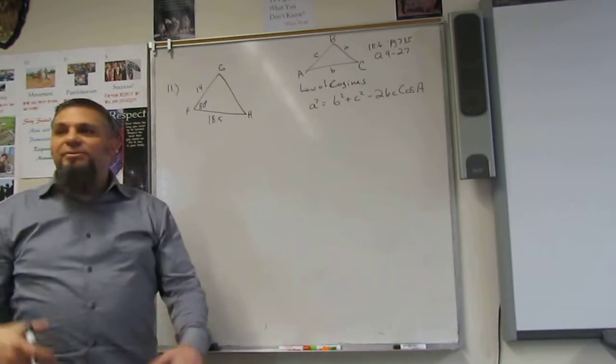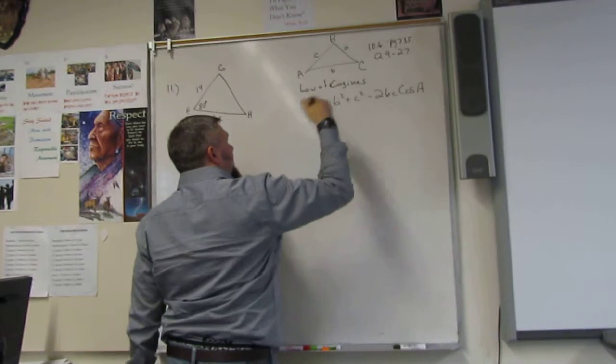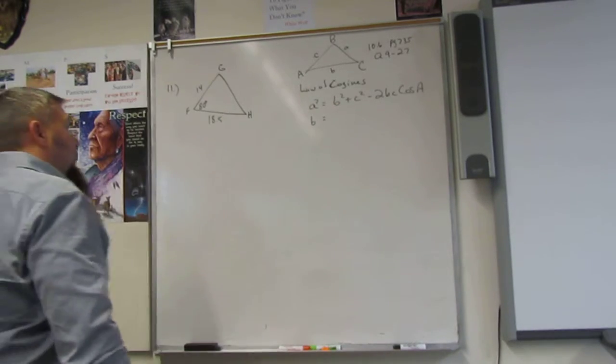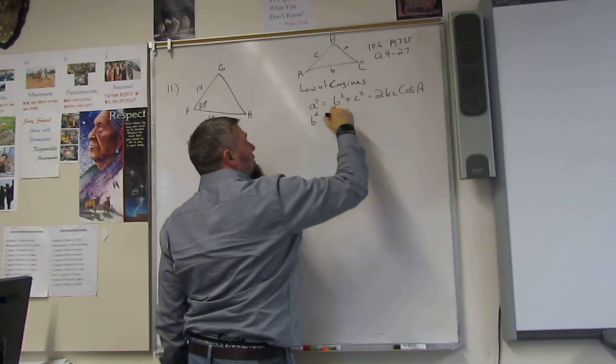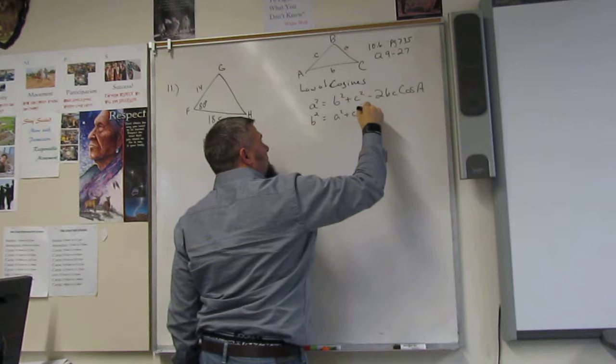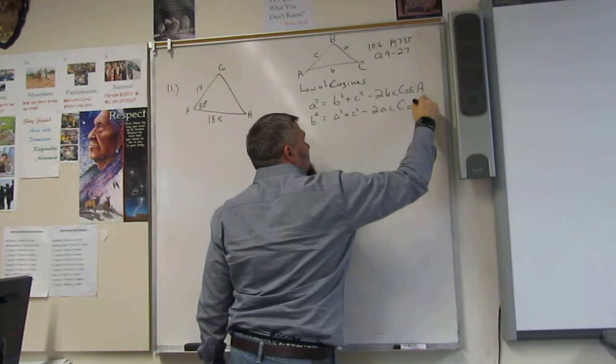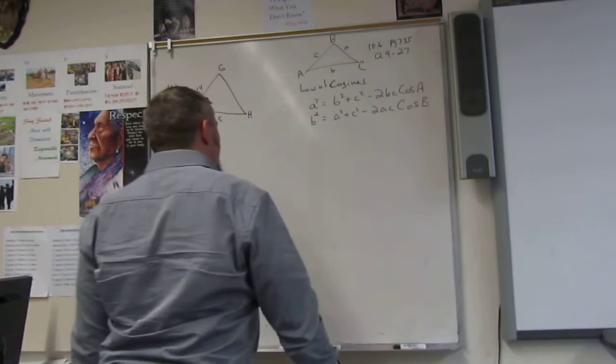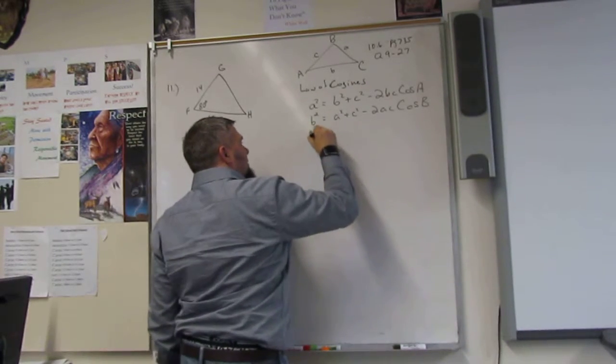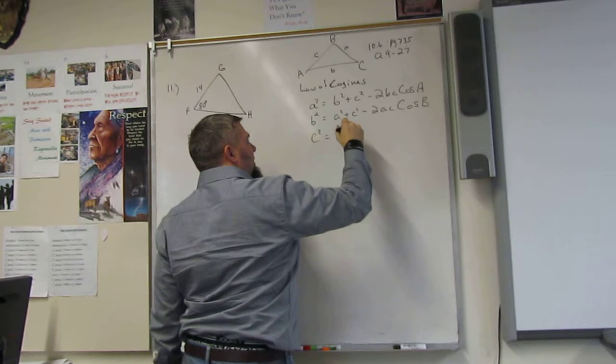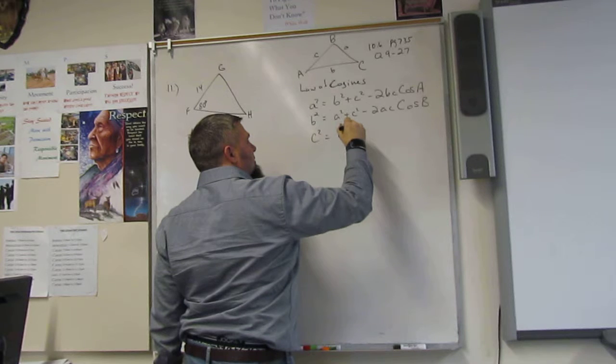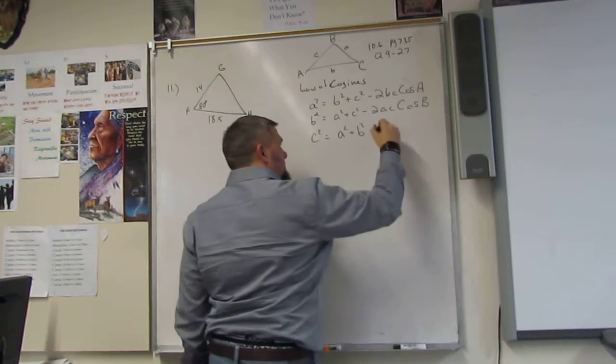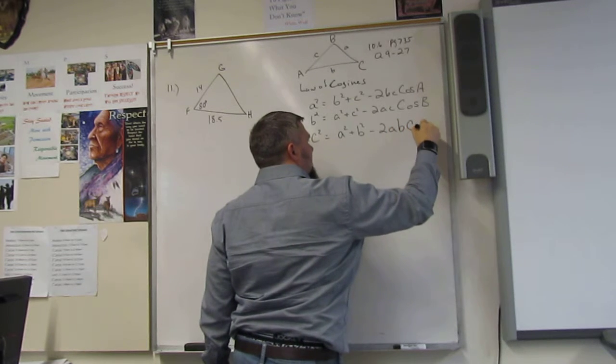So you can find this for any angle or any side. You can say b squared is equal to a squared plus c squared minus 2ac cosine b. And then what would the last one be? c squared equals a squared plus b squared minus 2ab cosine c.